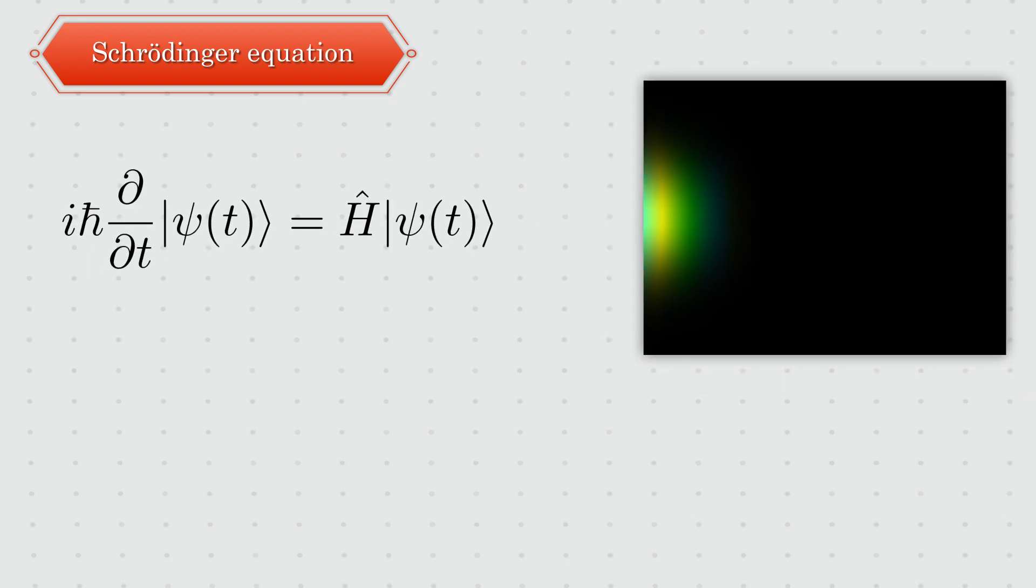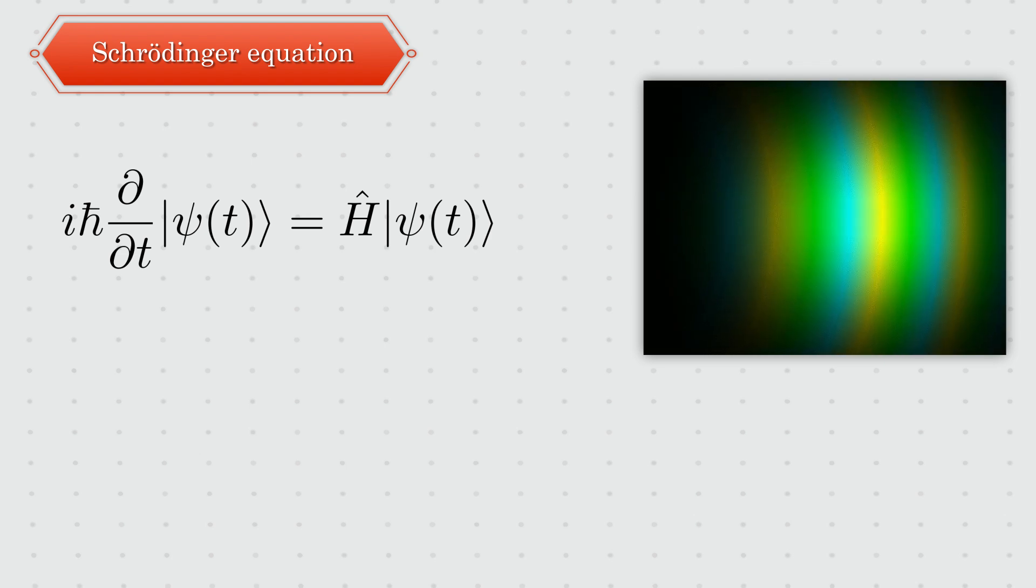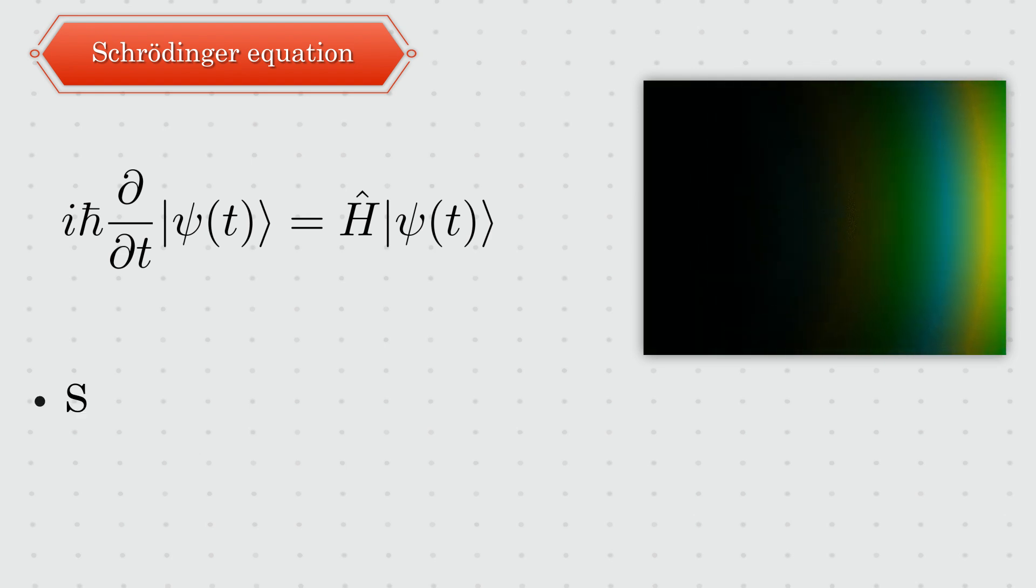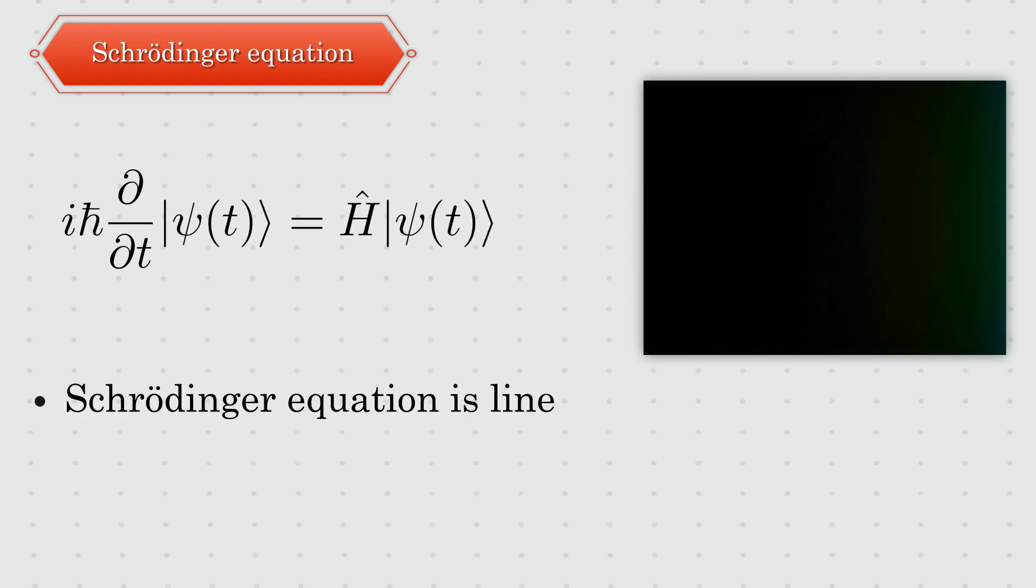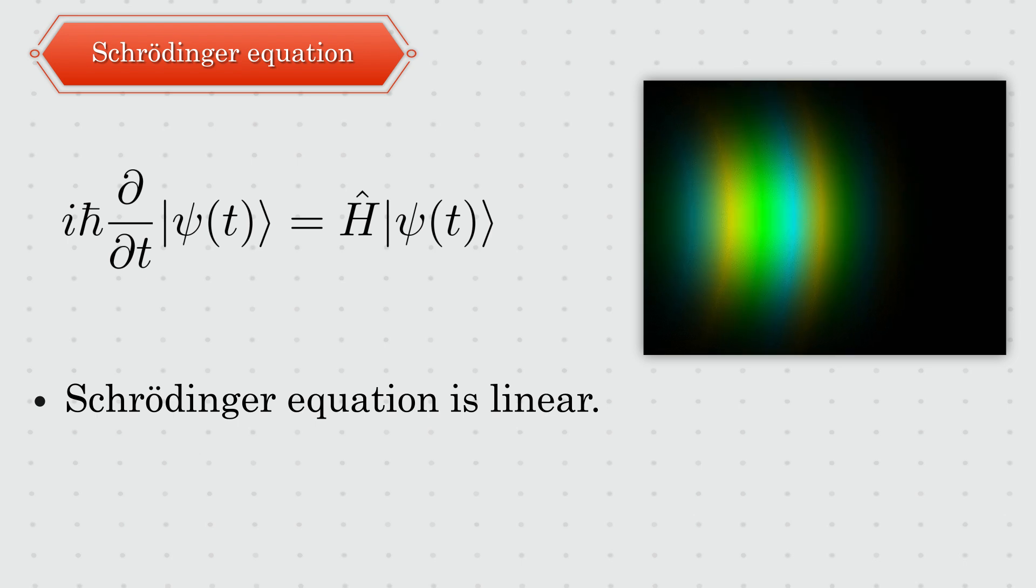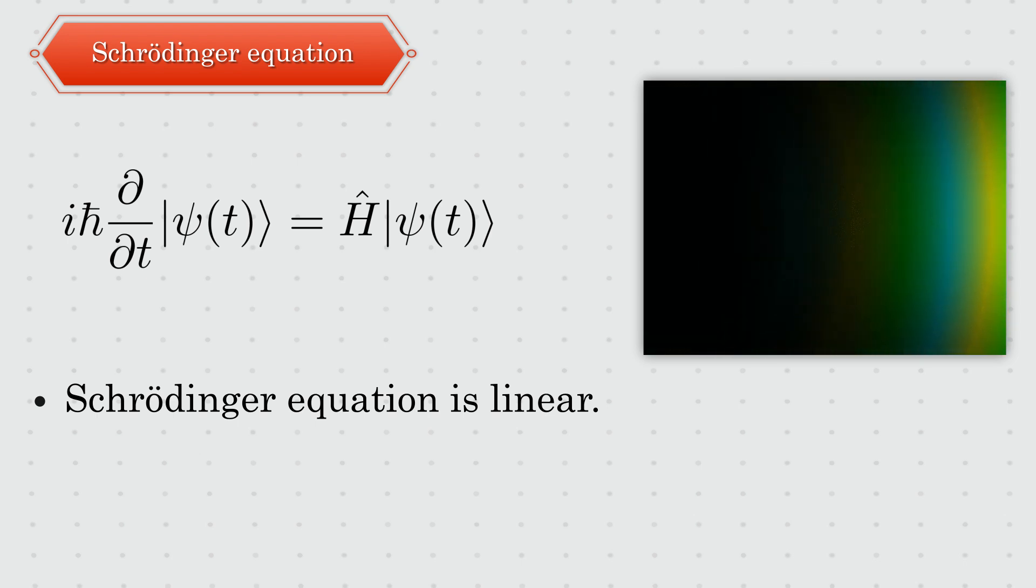Schrödinger equation is a linear equation. This means linear combination or superposition of different solutions to the Schrödinger equation is again a valid solution. It is exactly this linearity property that gives all the headaches.